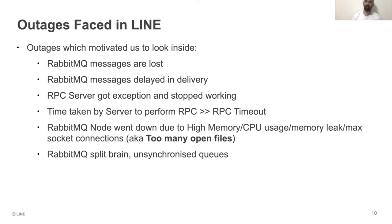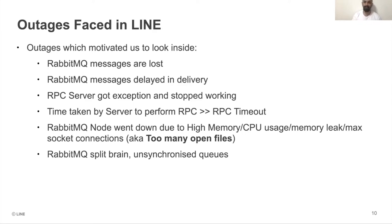When we started scaling up and modifying our infrastructure, we faced different problems that motivated us to investigate what issues existed. These problems included RabbitMQ messages being lost or delayed in service, certain RPC servers getting exceptions and stopping, and certain times the time taken by a server to perform an RPC being much more than the actual RPC timeout. Sometimes RabbitMQ nodes failed due to high memory usage, high CPU usage, memory leaks, or too many open files.